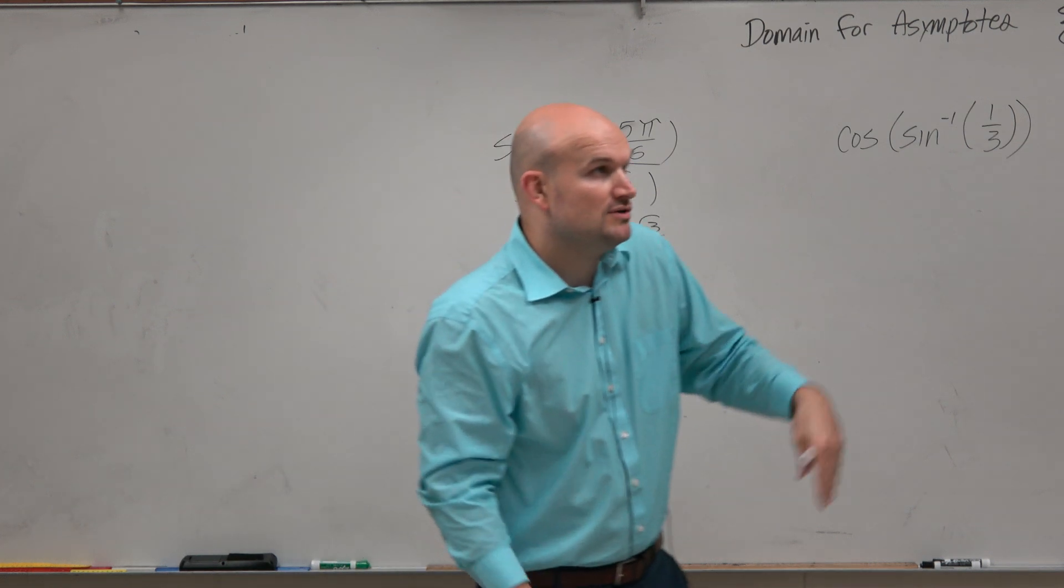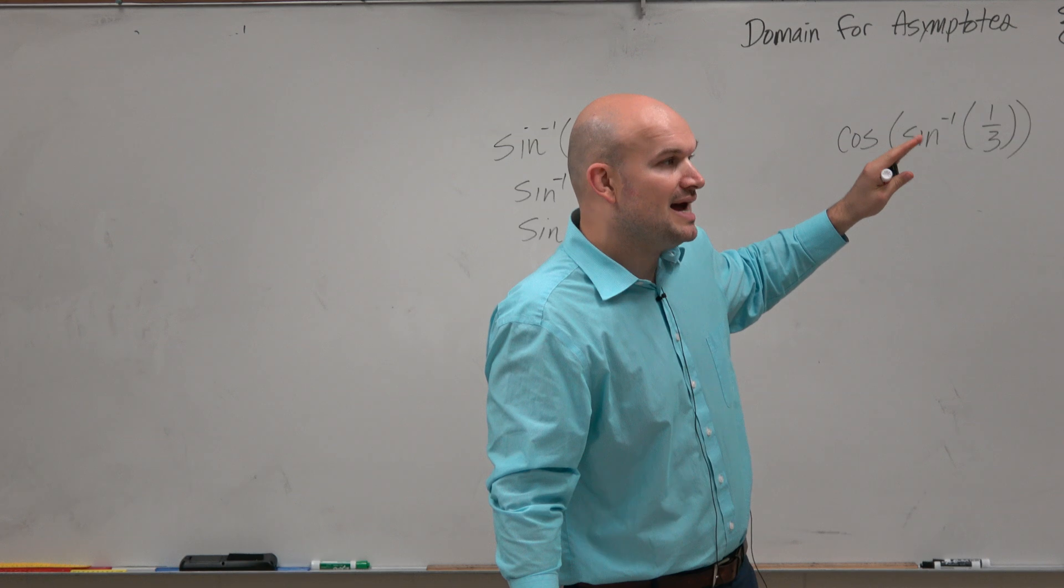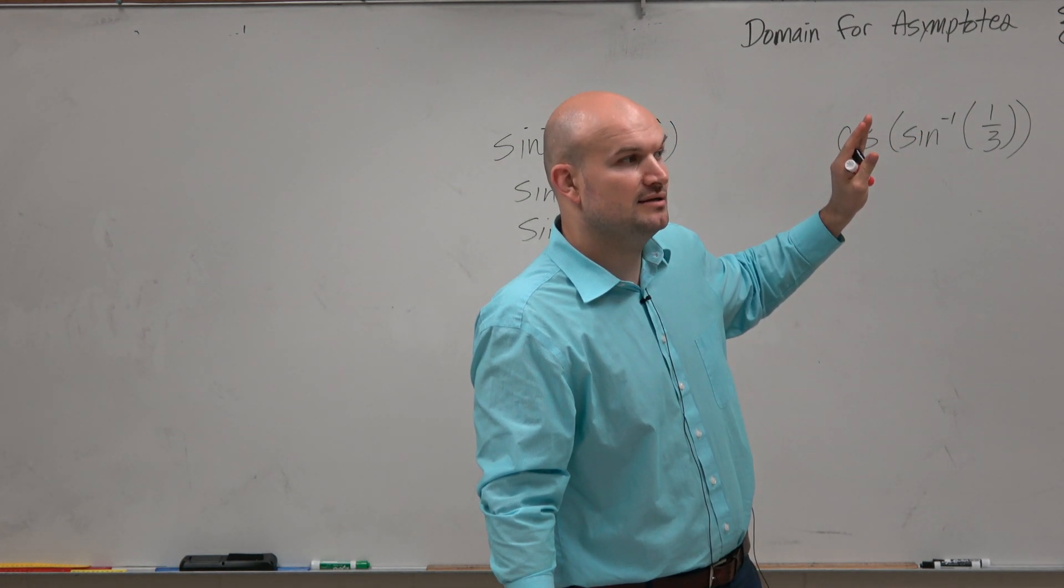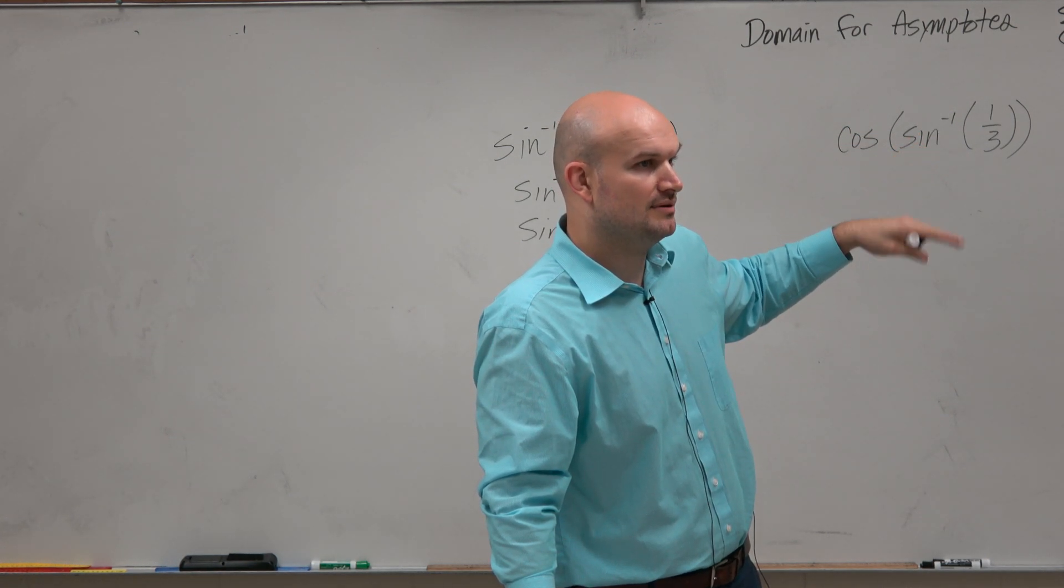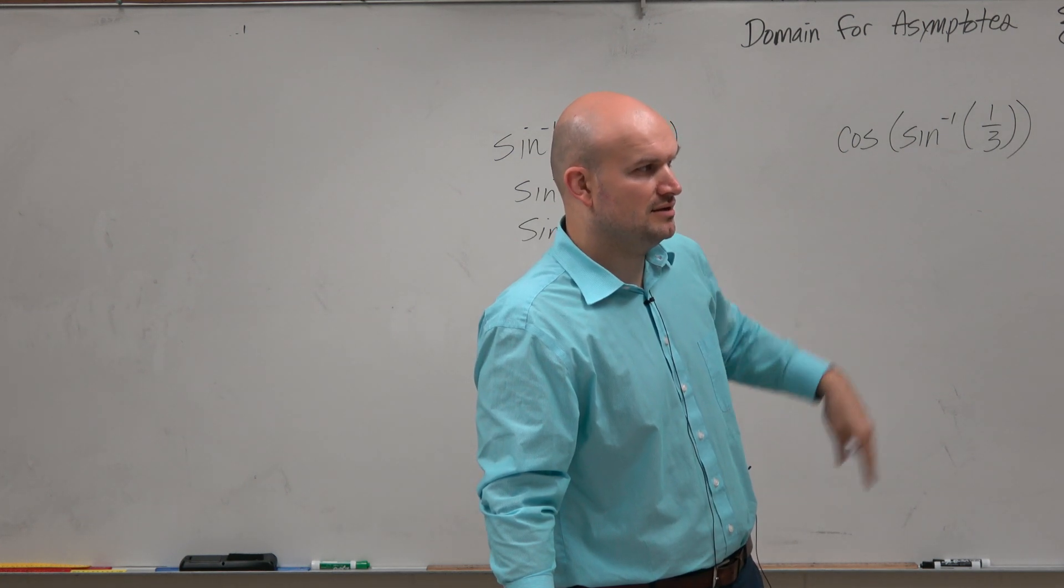So then you think, well, if cosine is equal to negative square root of 3 over 2 for π over 6, that means the sine has to equal that for which angle? Which angle would give us square root of 3 over 2 for sine? π over 3.